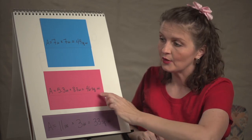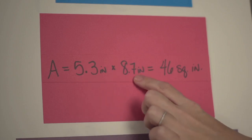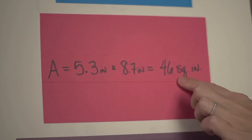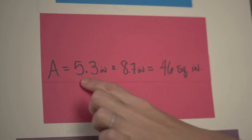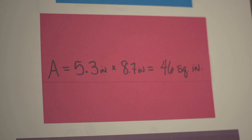This other rectangle, we have kind of squirrely numbers, 5.3 inches and 8.7 inches. That gives us an area of 46 square inches.